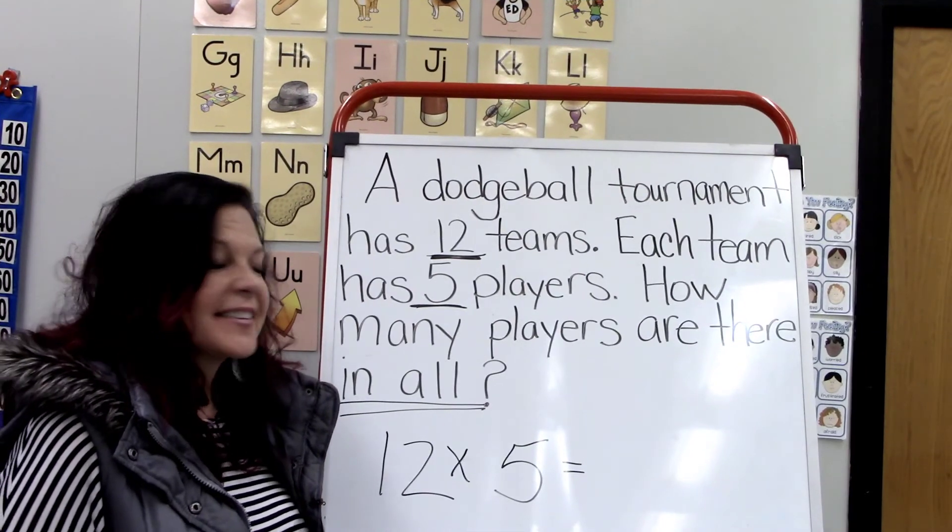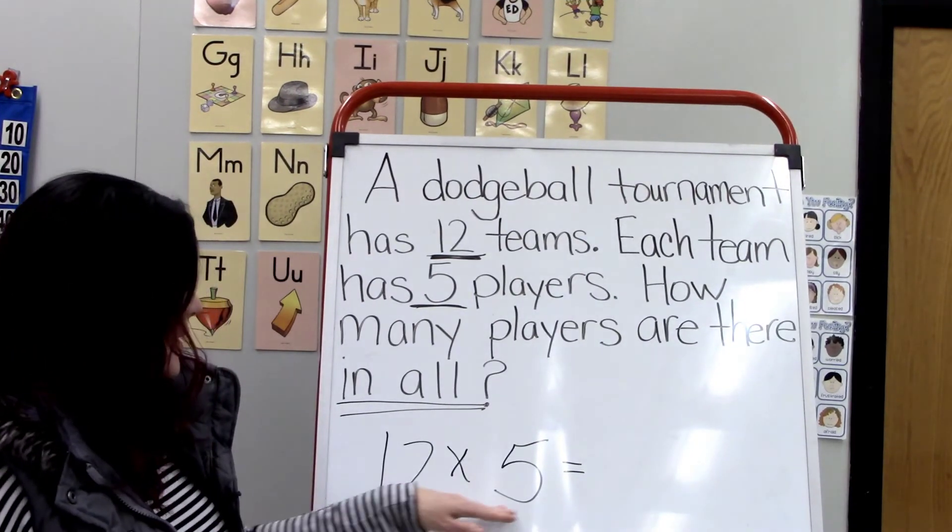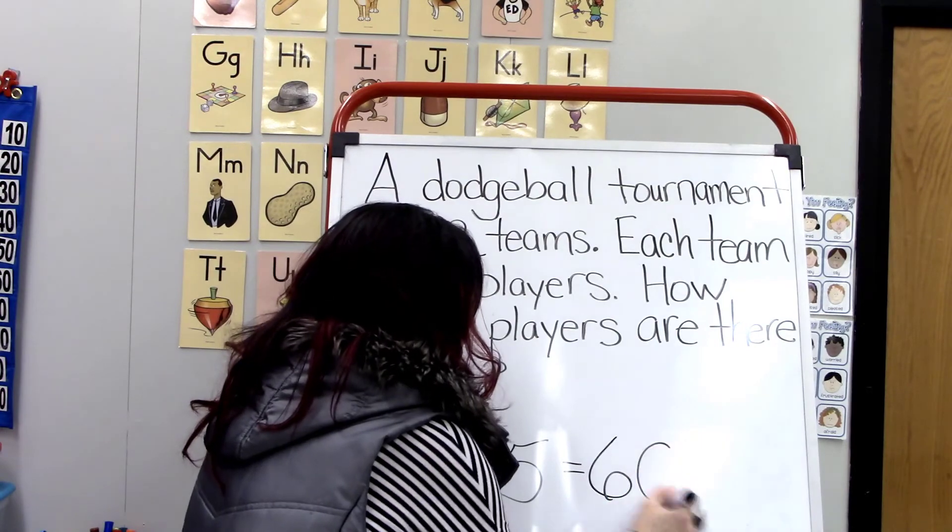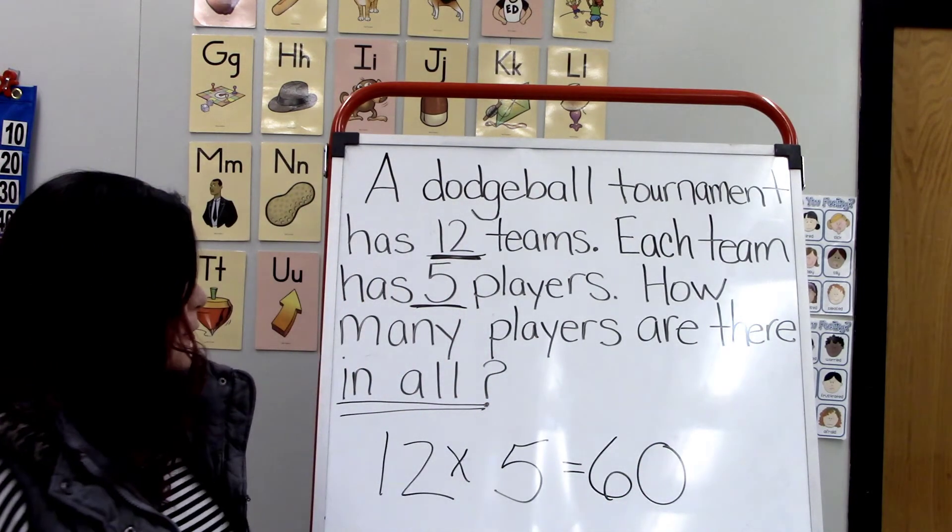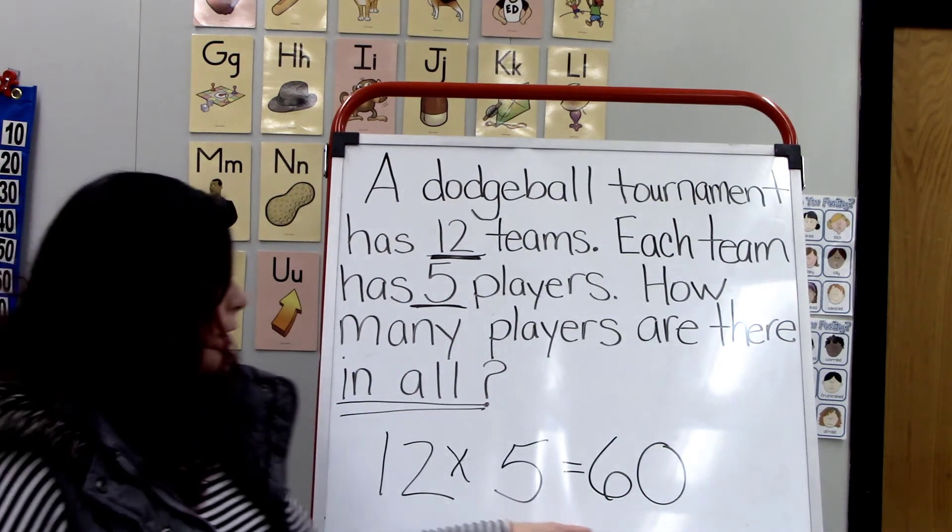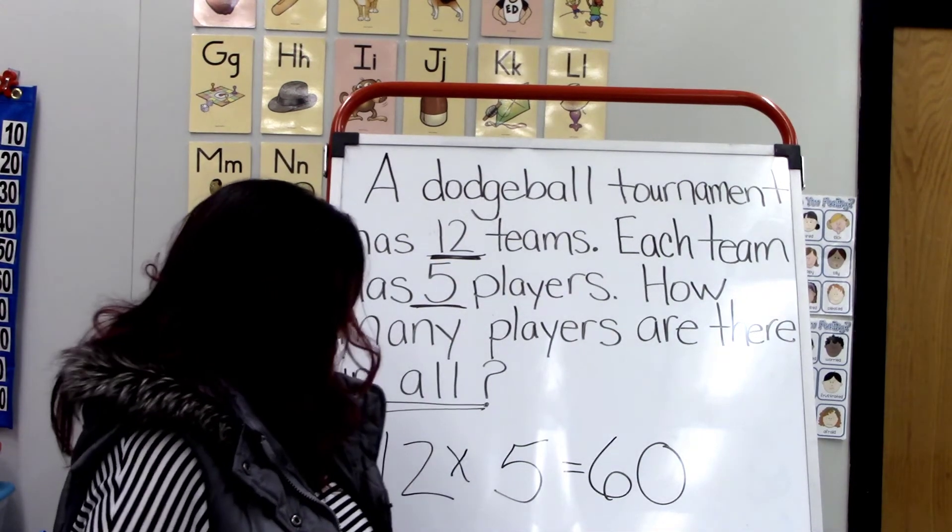So now I can solve my problem. 12 times 5 equals 60. And of course I would remember to include the word players. 60 players.